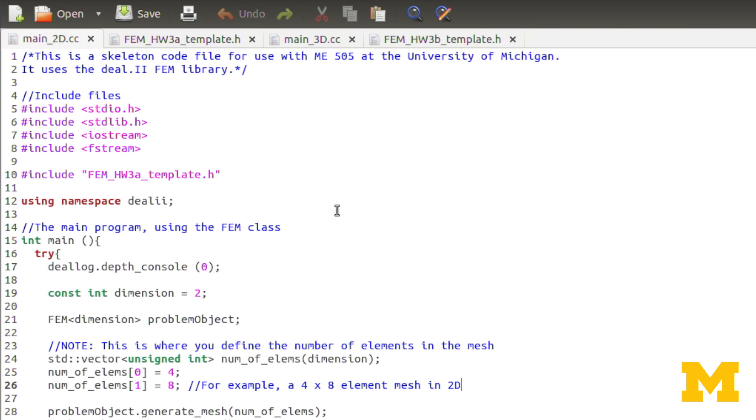Hi. In this segment, we'll begin looking at the coding template for the second coding assignment, which is homework three. So to begin with, let's look at the source file, main.cc. I've actually included two sets. We have source files and header files for the 2D problem and for the 3D problem. Let's look at the 2D problem first.